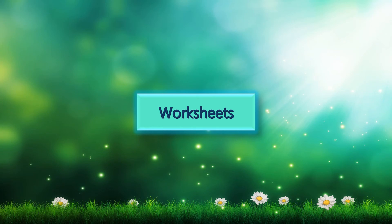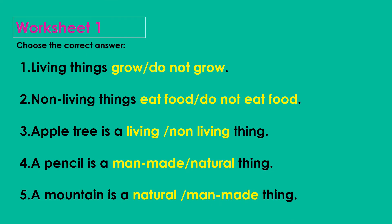Let us move to our worksheet section. Question 1: Living things grow or do not grow? The correct answer is grow. Question 2: Non-living things eat food or do not eat food? The correct answer is do not eat food. Question 3: Apple tree is a living or non-living thing? The correct answer is living thing. Question 4: A pencil is a man-made or a natural thing? The correct answer is man-made thing. Question 5: A mountain is a natural or a man-made thing? The correct answer is a natural thing.